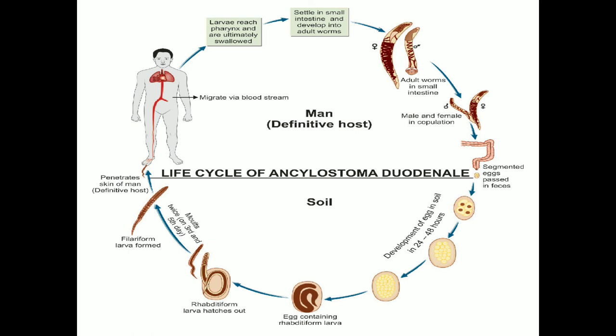Inside the human body, the larvae are carried along the venous circulation to the right side of the heart and then to the lungs. There they escape from the pulmonary capillaries into the alveoli, migrate up the respiratory tract to the pharynx, and are swallowed, reaching their final destination — the small intestine. During migration, they undergo a third molting on reaching the esophagus, then a fourth and final molting in the small intestine, where they develop the buccal capsule and grow into adult worms. There is no multiplication in the host; a single infective larva develops into a single adult worm. It takes about six weeks from the time of infection for the adult worms to become sexually mature.